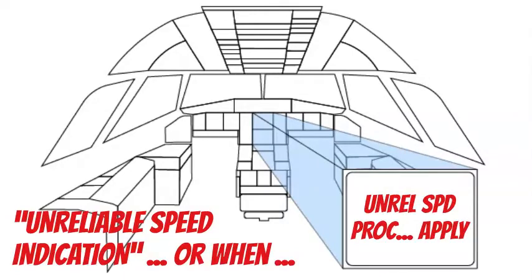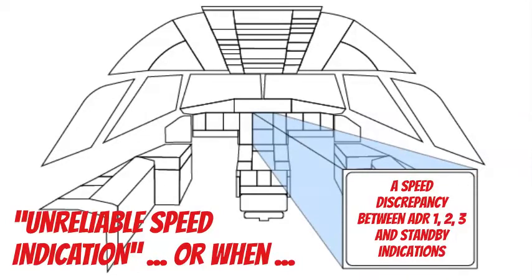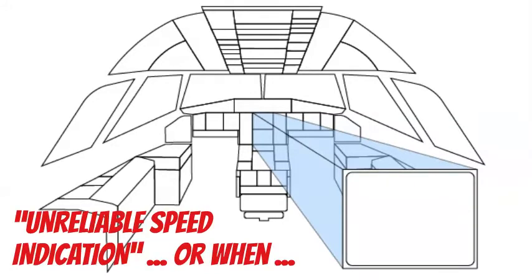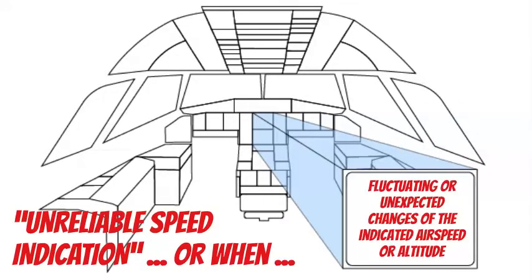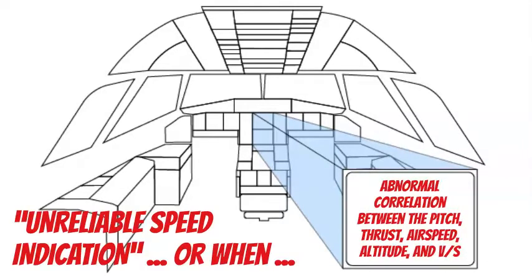Or, without any ECAM alert, in the following cases: first, a speed discrepancy between ADR 1, 2, 3 and standby indications; second, fluctuating or unexpected changes of the indicated airspeed or altitude; and third, abnormal correlation between the basic flight parameters — pitch, thrust, airspeed, altitude, and vertical speed indications.